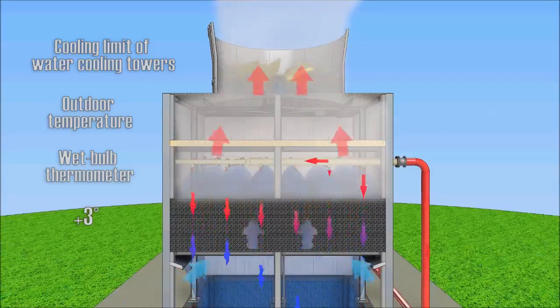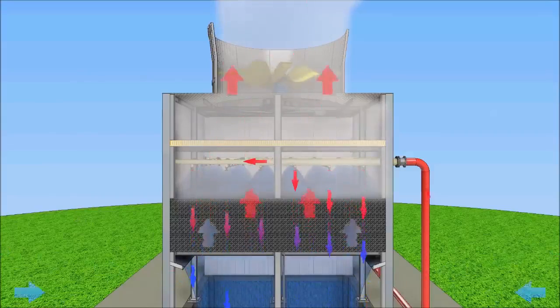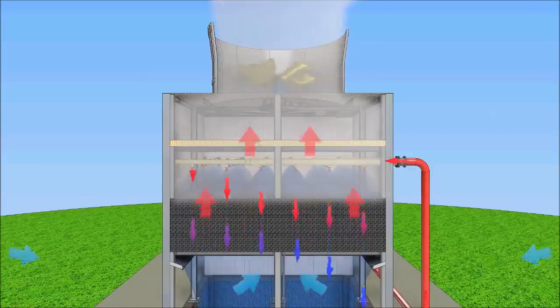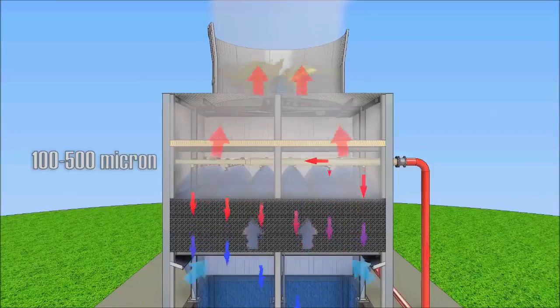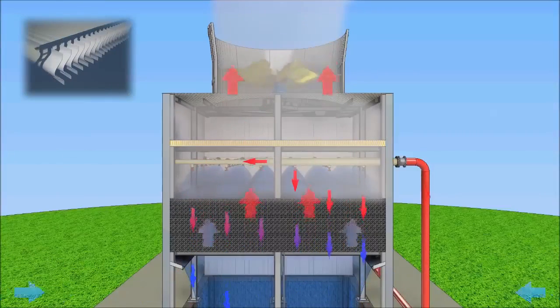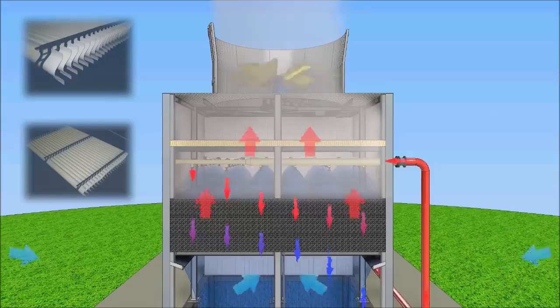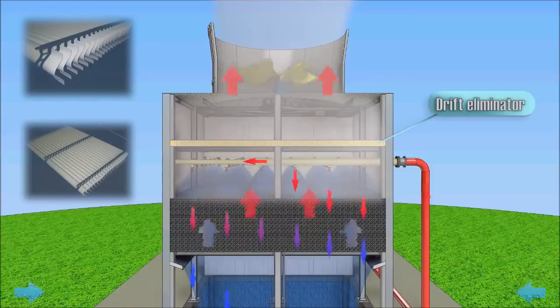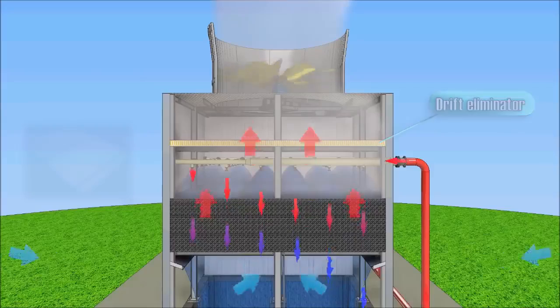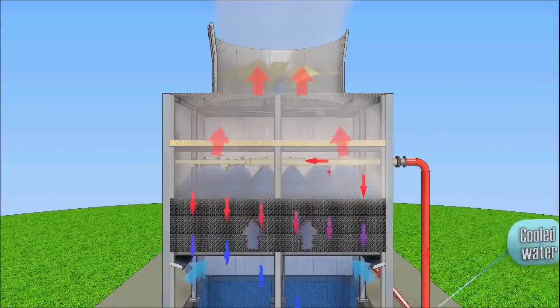In practice, the limit of cooling is the temperature of the wet bulb thermometer plus 3 degrees Celsius. Operating a cooling tower emits air saturated with water vapor and containing water droplets with size of 100 to 500 microns. To prevent entrainment of water droplets, above the water distribution system is installed a drift eliminator.